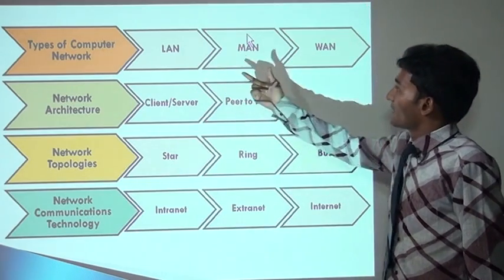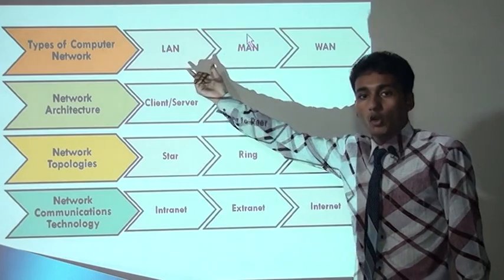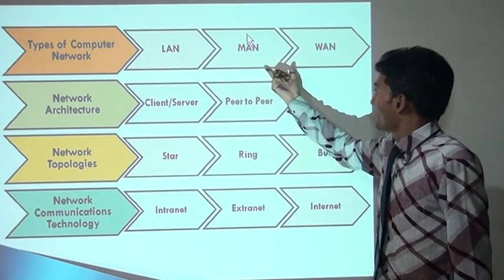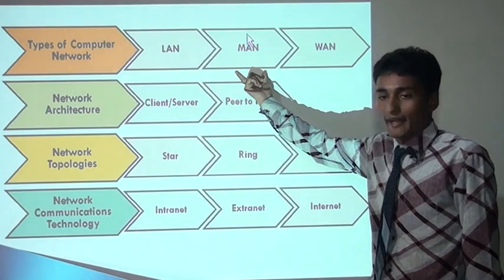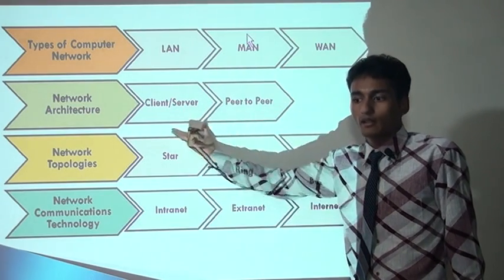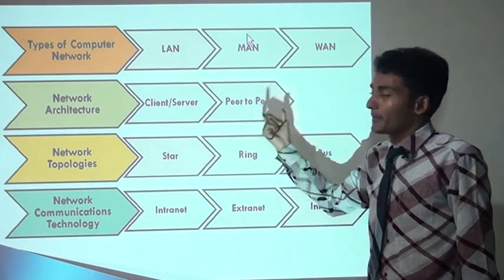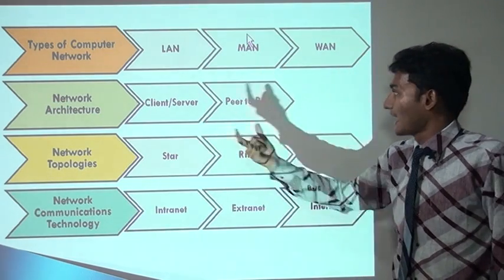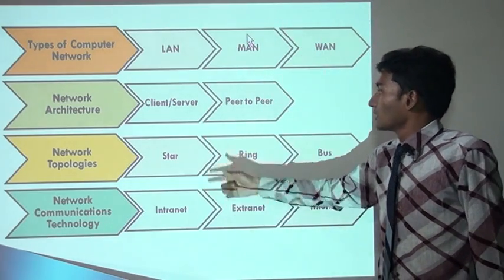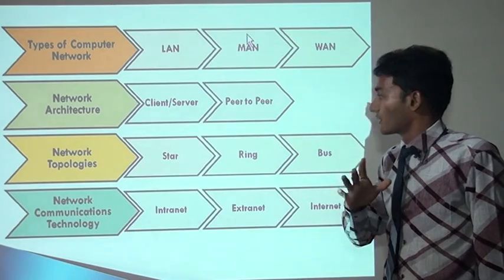There are various types of networks available. LAN stands for local area network. WAN stands for wide area network. And MAN stands for metropolitan area network. There are two types of network architecture: client-server architecture and peer-to-peer. Peer-to-peer means user-to-user. Client-server means one user is a client and another user is a server. Both are simple types of computers but with a capacity difference.